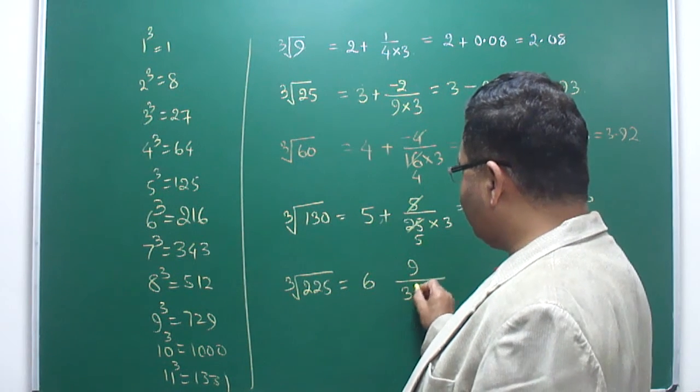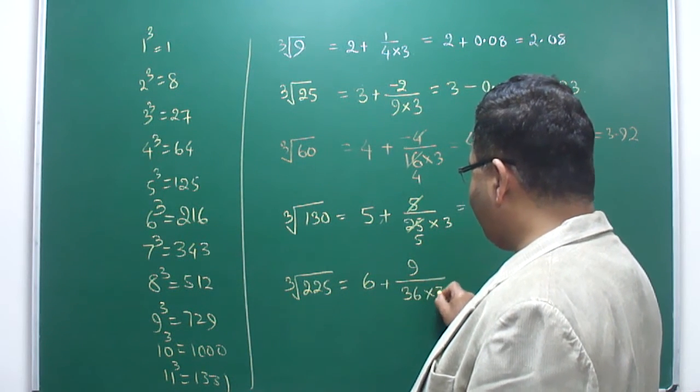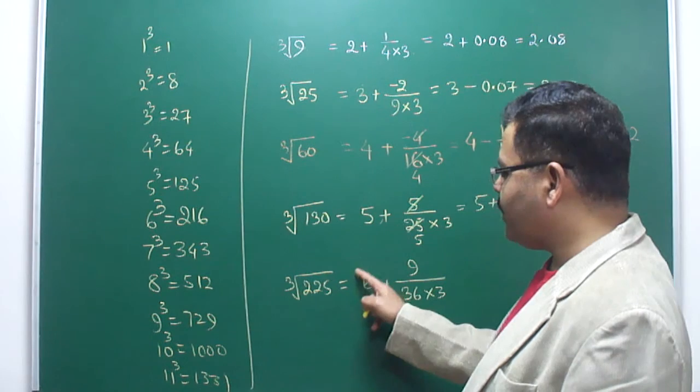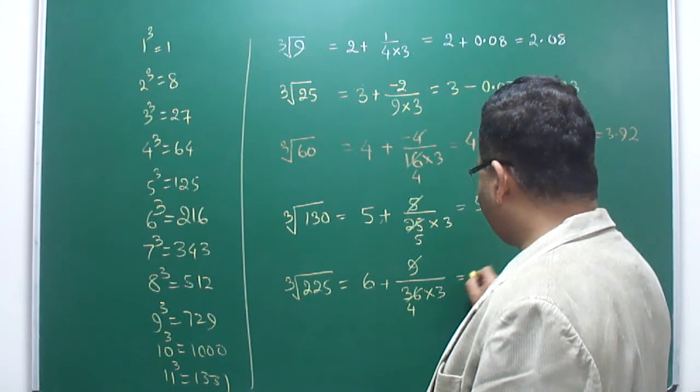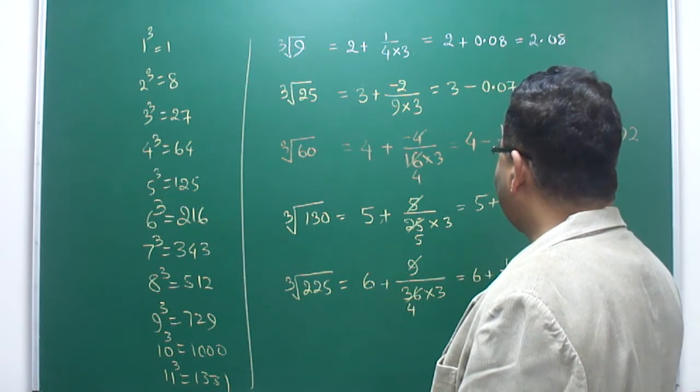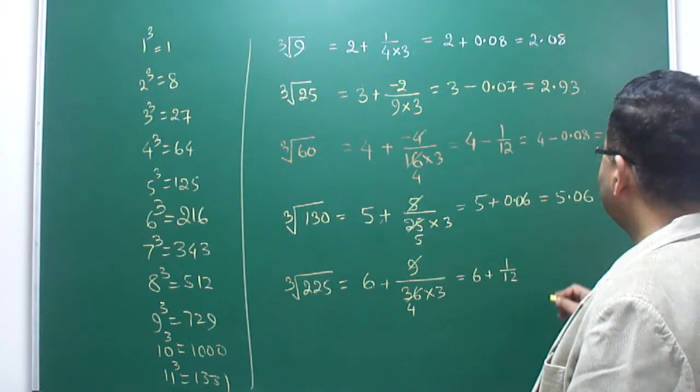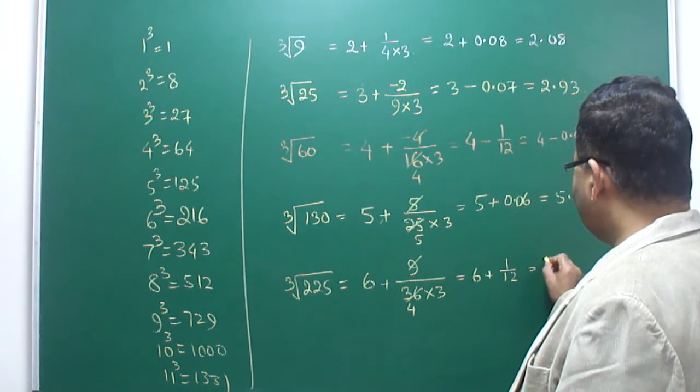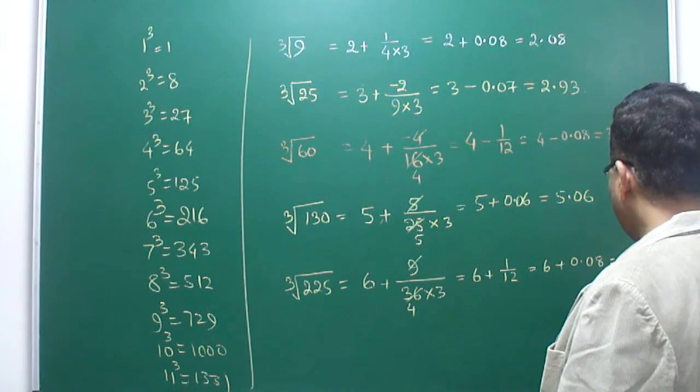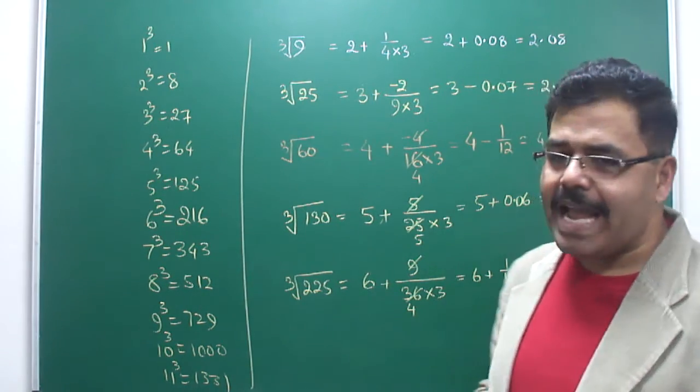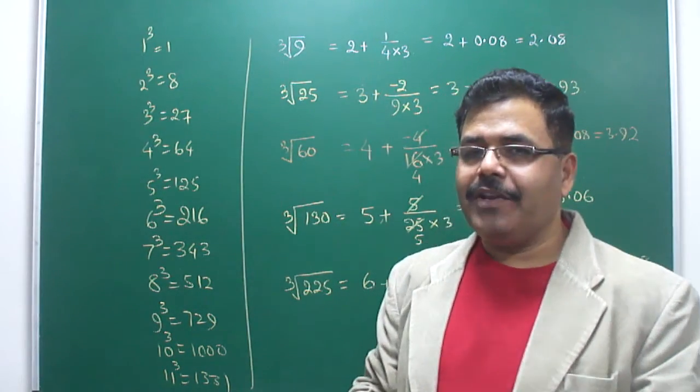So I can write here 9. Now the square of this number is 36, multiply by 3. So 6 plus 1/12 again. 1/12 you know is 0.08, so 6 plus 0.08, that is 6.08. So any number of this category can be dealt with using this trick.